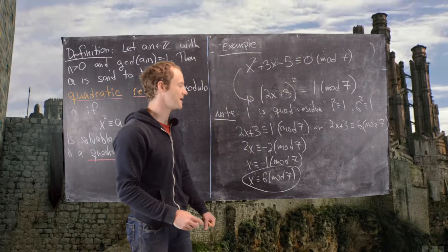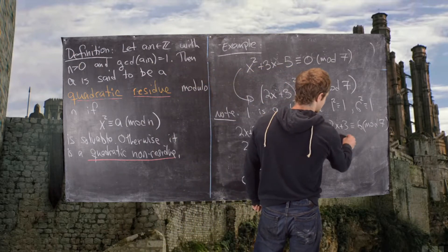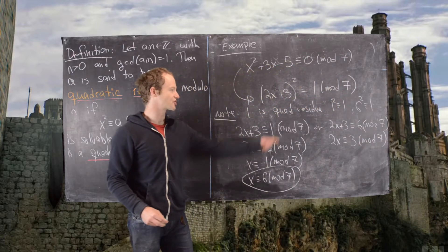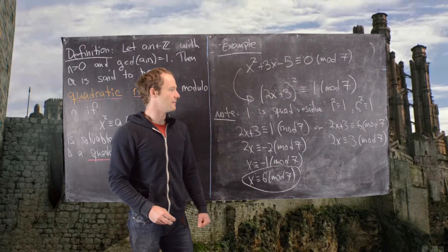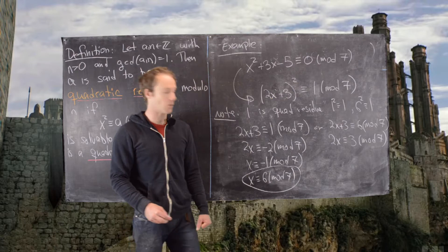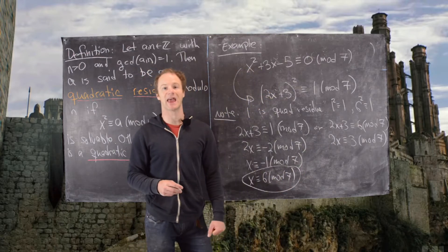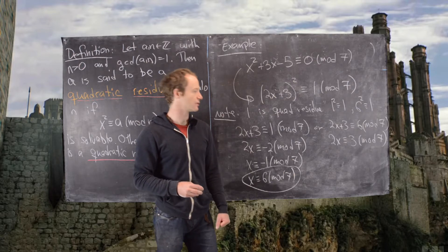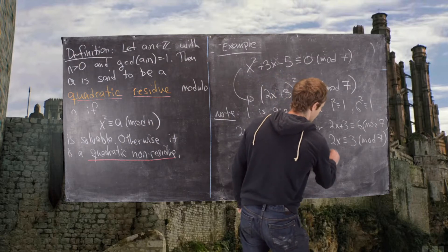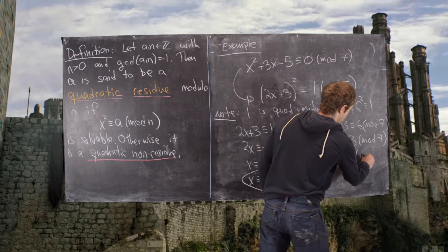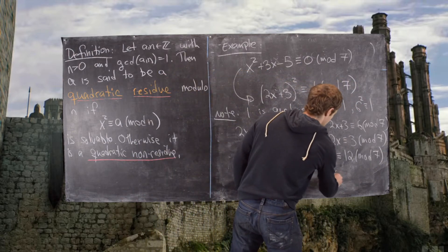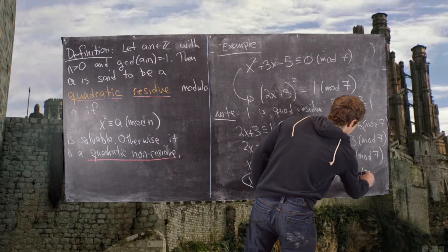Now the next one we can get from this. So this will give us 2x is congruent to 3 mod 7. And now we have to actually multiply by the inverse. So notice the inverse of 2 mod 7 is 4, and that's because 2 times 4 is 8, and 8 is congruent to 1 mod 7. So we'll multiply both sides of this equation by 4. That will give us x is congruent to 12 mod 7. But now 12 is congruent to 5 mod 7, so we have x is congruent to 5 mod 7.